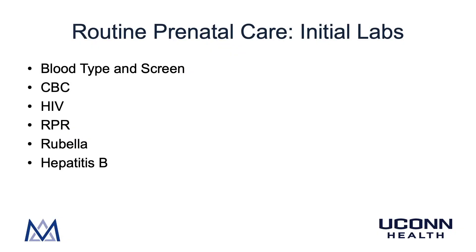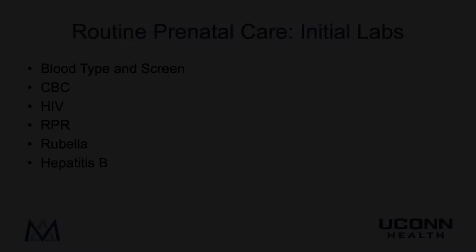We also check a complete blood count. It's important to note that the patient will have some degree of anemia of pregnancy — we want to know where she is starting in terms of hemoglobin and hematocrit. Also, gestational thrombocytopenia is common at the end of pregnancy, and it's important to know her baseline platelet count.